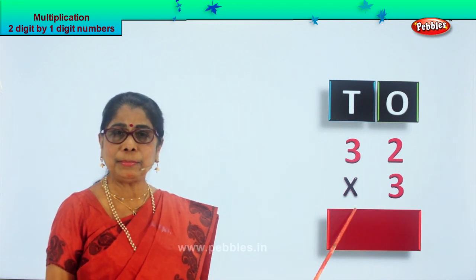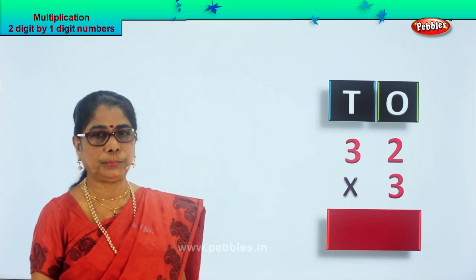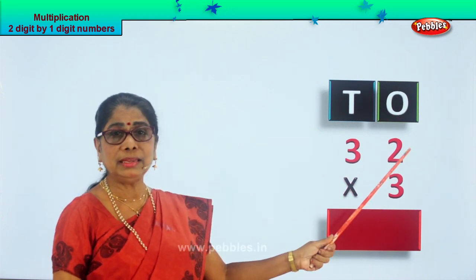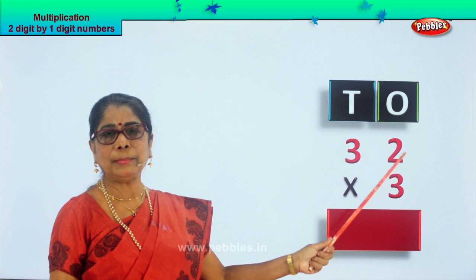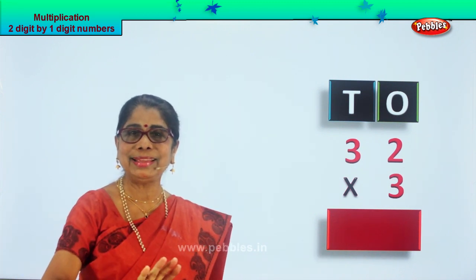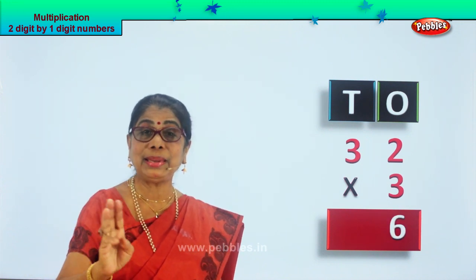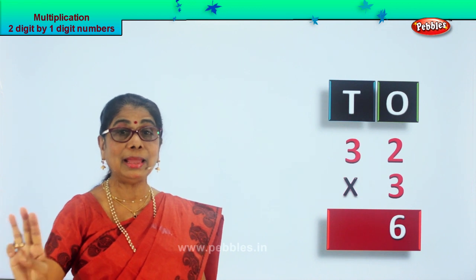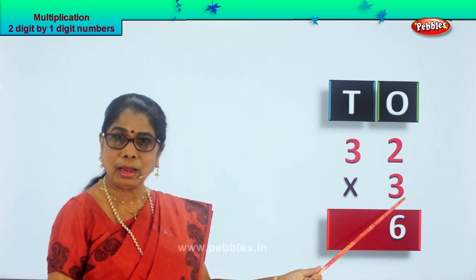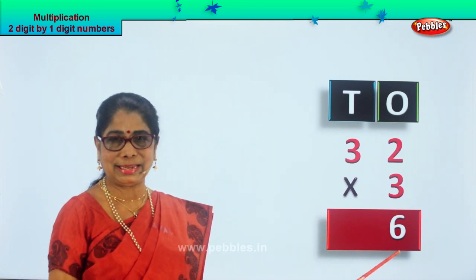Thirty-two multiplied by three. Let's go to the ones, please. Three twos — two times — three plus three? Six. Multiplication is repeated addition. Three plus three will give you six. Three twos are six. Three ones are three, three twos are six.